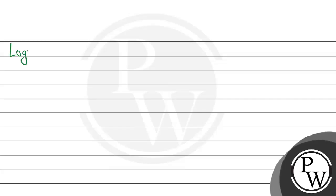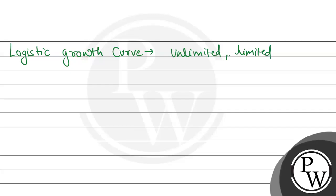If we talk about another type of curve, it is called the Logistic Growth Curve. In the Logistic Growth Curve, there are realistic expectations — meaning that in reality, there are not unlimited resources. The resources are limited. Predators are also available in any ecosystem, so here the resources are not unlimited but limited. The growth curve presented in this case is S-shaped.